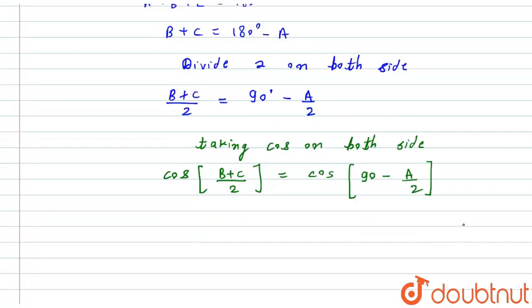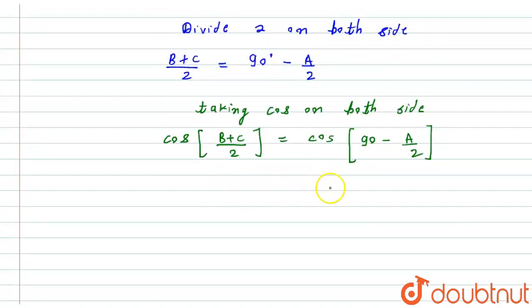Now, as we know that cos(90° - θ) is equal to sin(θ). Here, the θ is A/2, so in place of cos(90° - A/2), I can write sin(A/2) in accordance with this formula.